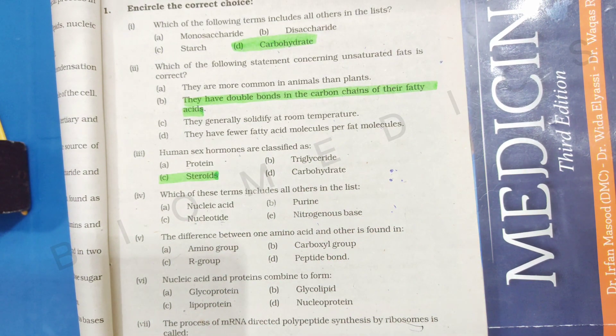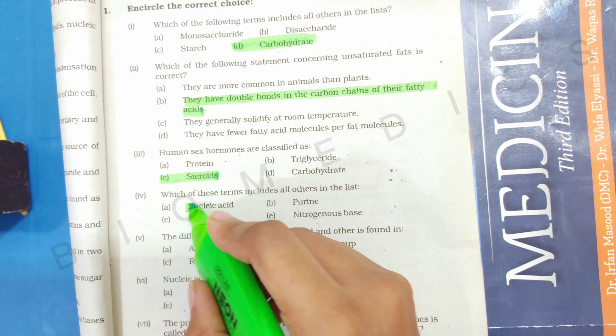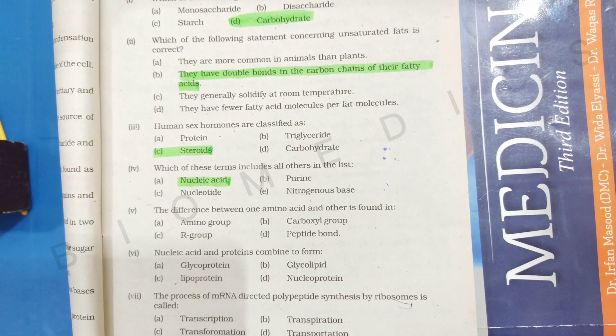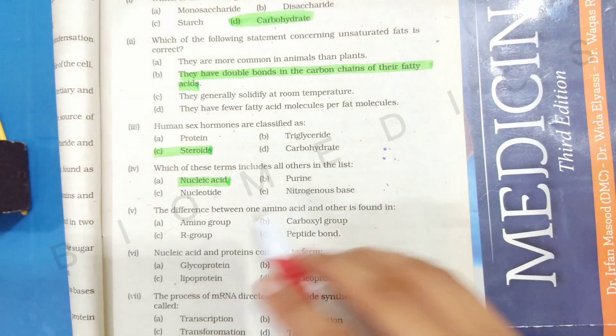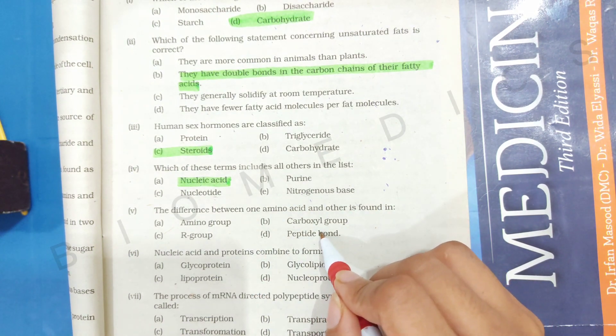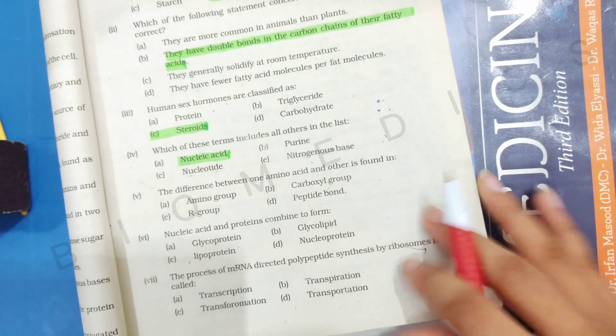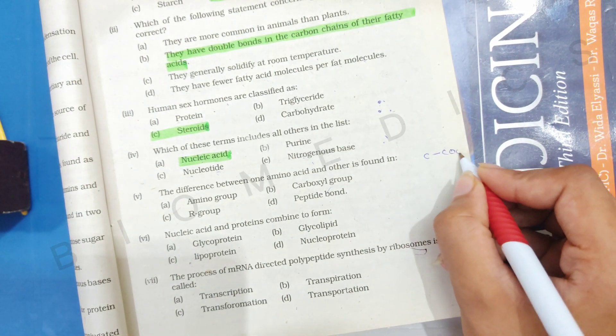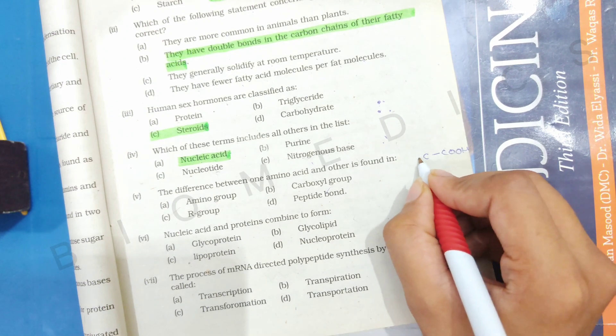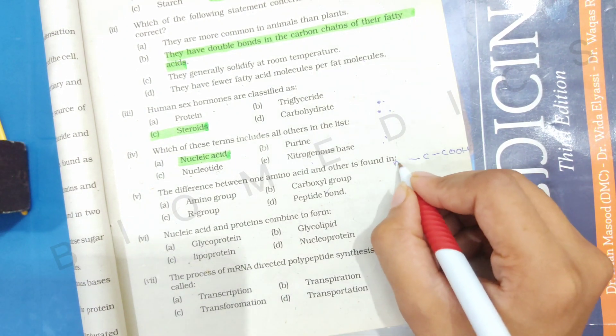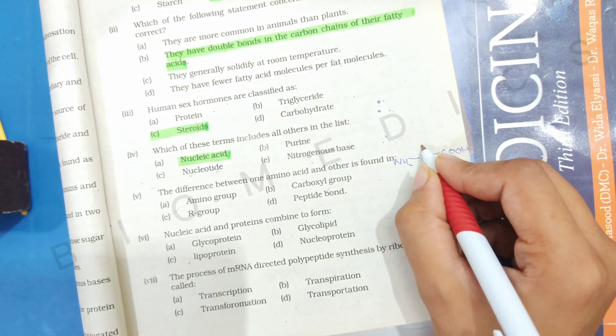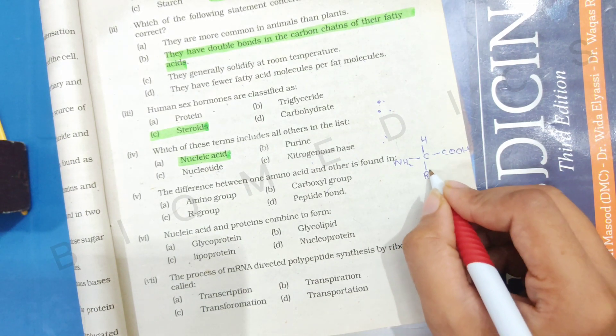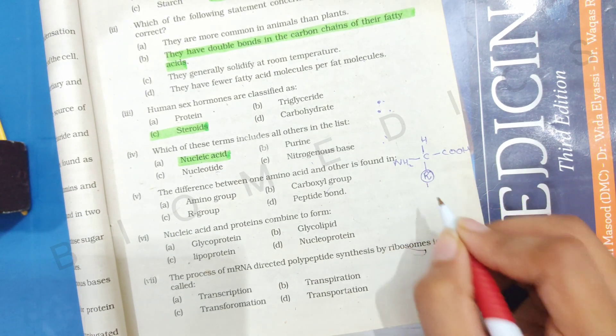Then, the difference between one amino acid and another is found in the R group. We need to know the structure: there is a carbon atom, in the center is a carbon atom, on one side is an amino group, on one side is a carboxyl group, and on one side is hydrogen, and on the other side is a side chain. We call it the R group or side chain.